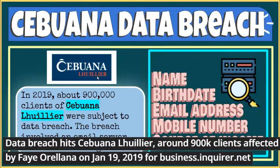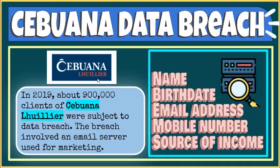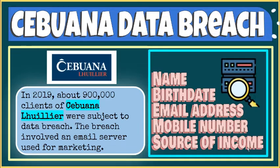Another data breach in the Philippines took place at the beginning of 2019 — the data breach of about 900,000 clients of Cebuana Lhuillier. Cebuana Lhuillier offers domestic and international remittance, pawning, micro-insurance, and micro-loaning services with over 2,500 branches around the Philippines. Cebuana revealed that name, date of birth, email addresses, mobile number, and in some cases income information may have been exposed in the incident.